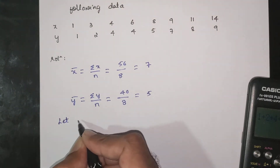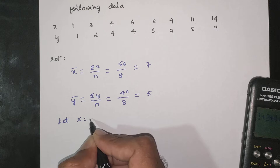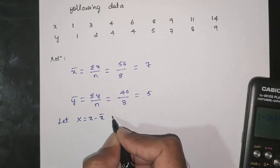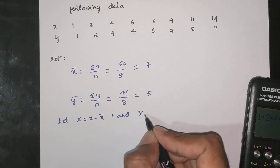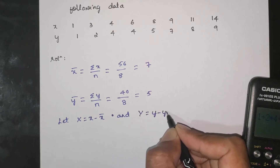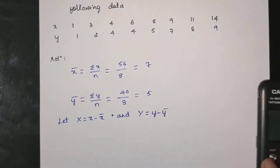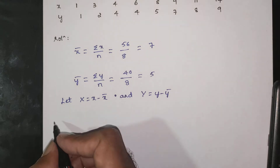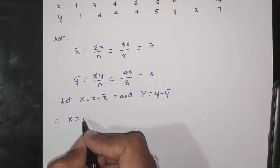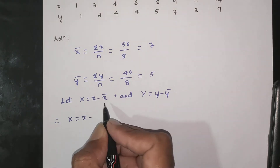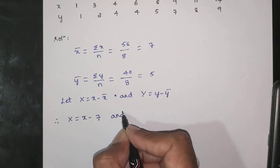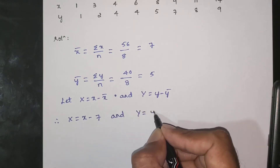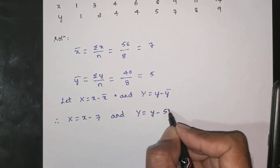Let capital X = x minus x̄, where x̄ = 7. And capital Y = y minus ȳ, where ȳ = 5. These are the deviation values we will use.